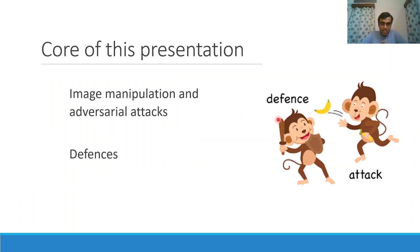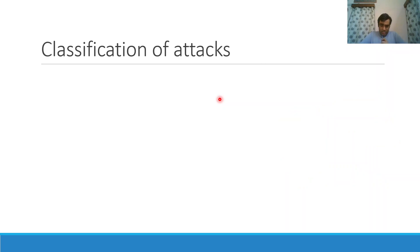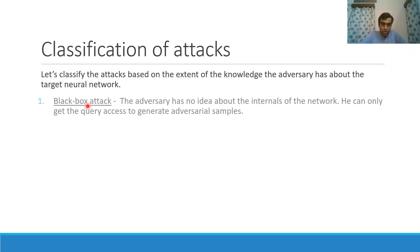The outline of this presentation is first we will discuss image manipulation and adversarial attacks, and then my friend will discuss the defenses part. So first let's classify the attacks based on the extent of the knowledge the adversary has about the target neural network.